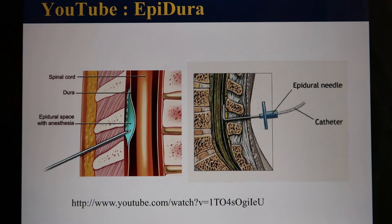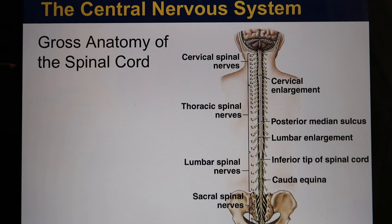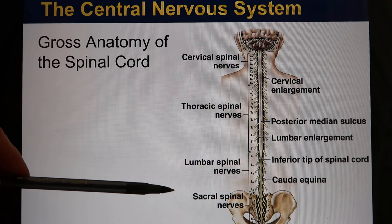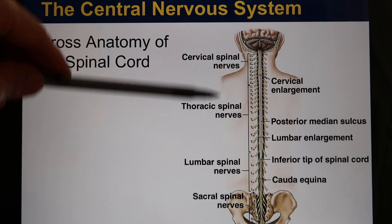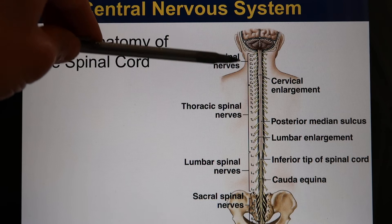The spinal cord has cervical, thoracic, lumbar, and sacral regions. For the bones, you have seven cervical, twelve thoracic, five lumbar, and five sacral vertebrae fused together. The nerves exit between the bones, so there is one extra pair: eight cervical pairs, with all other regions having the same number as their vertebrae.